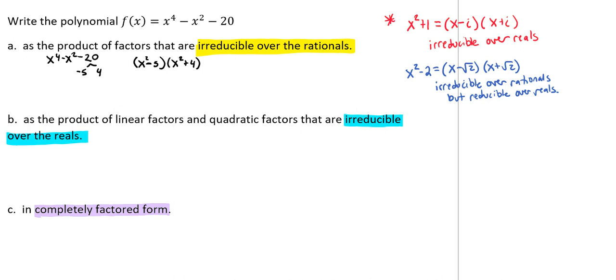So from here, we're going to need to look at that and decide, is that finished? So first, we're going to have this as our final answer as far as irreducible over rationals.